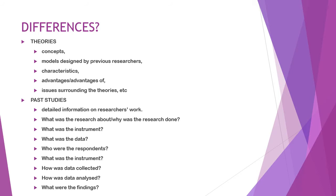Some people ask whether there are differences between theories and past studies, and why I separate them when it comes to literature review. In my case, I separate them because theories talk about concepts. In the theory section, I present theories by different researchers, discuss concepts, and talk about different models designed by previous researchers, as well as the characteristics of those theories.